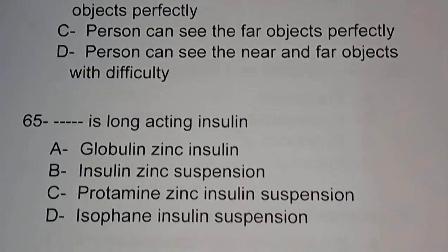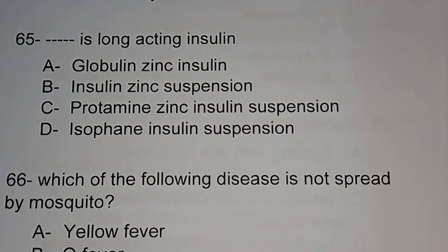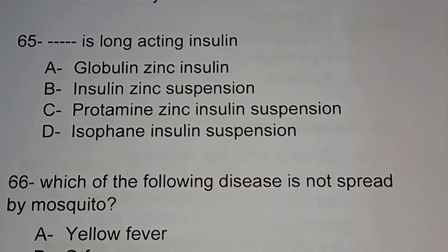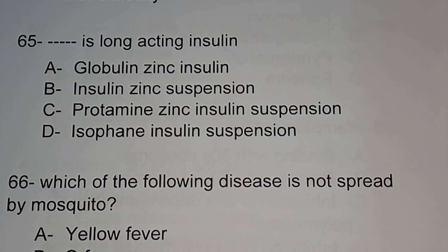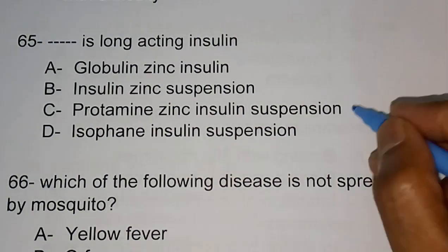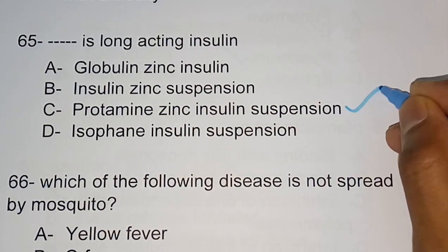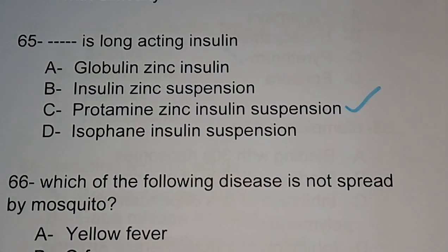Question number 65: which is a long-acting insulin? Options are globulin zinc insulin, insulin zinc suspension, protamine zinc insulin suspension, isophane insulin suspension. The correct answer is option C — protamine zinc insulin suspension is a long-acting insulin.